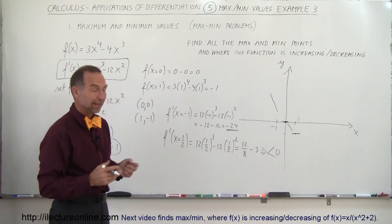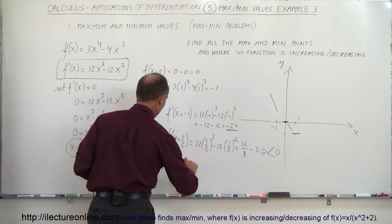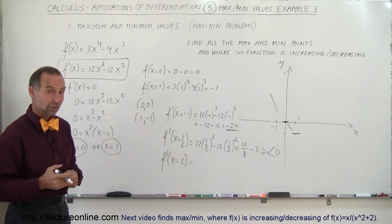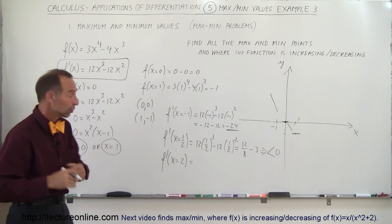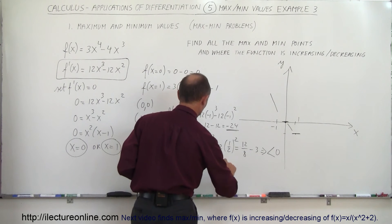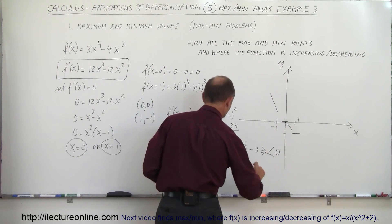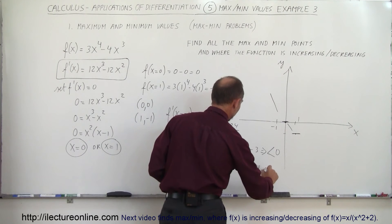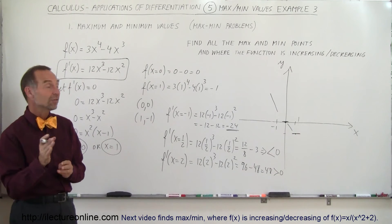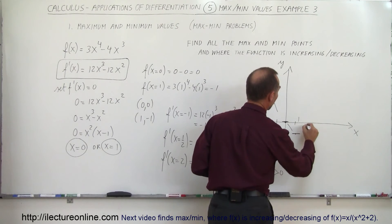Finally, we take a point to the right of that second critical point — let's use x equals 2. We evaluate f prime of 2: 12 times 2 cubed minus 12 times 2 squared equals 96 minus 48, which equals 48. That is greater than zero, so the slope is positive, which means the function is increasing to the right of the second critical point.